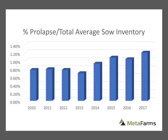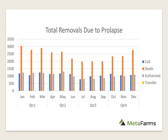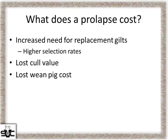This MetaFarms graph from a Feedstuffs article looks at prolapses going up based on removal records. This is percent prolapse over total average sow inventory — not mortality. In 2013 it was right around 0.8 percent; by 2017 it jumped up to 1.2 percent. Over total average sow inventory that number is bigger than you'd expect. Looking at total removals due to prolapse over a calendar year — using an eight-year data set — we also see a seasonal association with the winter months for prolapses.